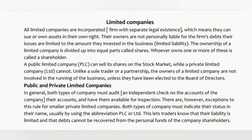Public and private limited companies: in general, both types of company must have an independent audit — a check of the company's accounts — and have them available for inspection, though there are exceptions to this rule for smaller private limited companies. Both types must indicate their status in their name, usually by using the abbreviation PLC or Ltd. This lets traders know that their liability is limited and that debts cannot be recovered from the personal funds of shareholders.